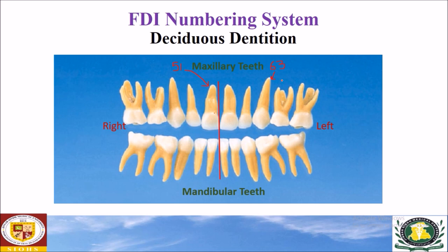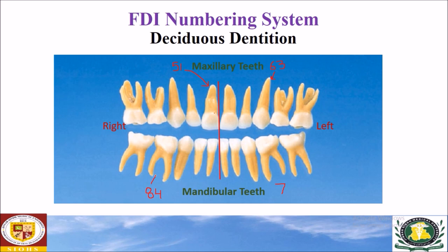Now the mandibular right first molar — this is the mandibular arch. The mandibular right first molar is in the eighth quadrant. Counting from the midline: one, two, three, four — this tooth is the fourth tooth. So the mandibular right first molar is referred to as eight four in the FDI notation system.